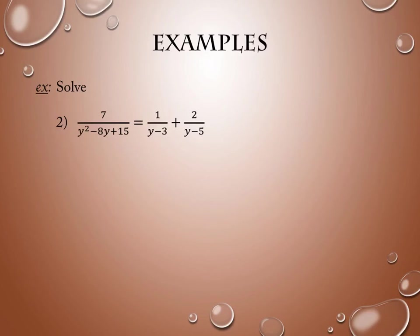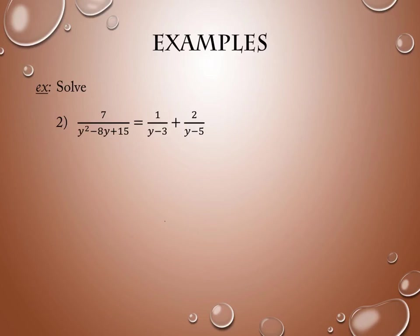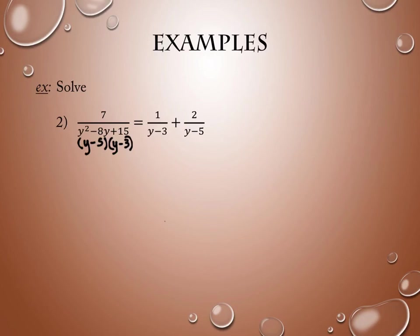As we take a look at this problem, we need to figure out what my denominators actually are in factored form. The second and third denominators are already as simple as they get. However, the first one can be factored. How would I factor this first denominator? Y and Y, minus 5 and minus 3 — which happens to be the other two denominators that are already on the other side.